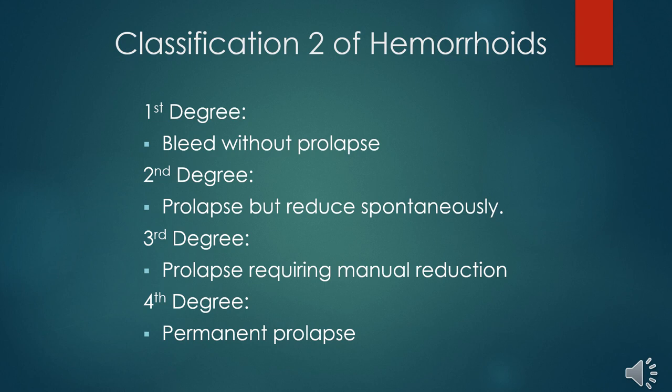For the fourth degree, the hemorrhoid will prolapse and bleed and will constantly remain prolapsed. Even if you try manual reduction, you will not be able to reduce them. This is the grading or degree one to four of hemorrhoid classification.